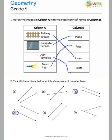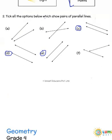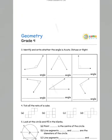D again is parallel lines. E is also a set of parallel lines, whereas F is a set of intersecting lines. Let us look at the next one.